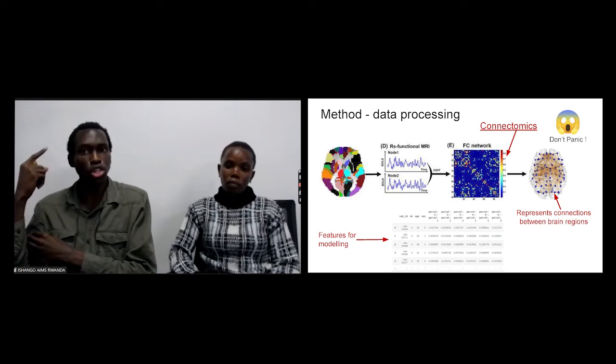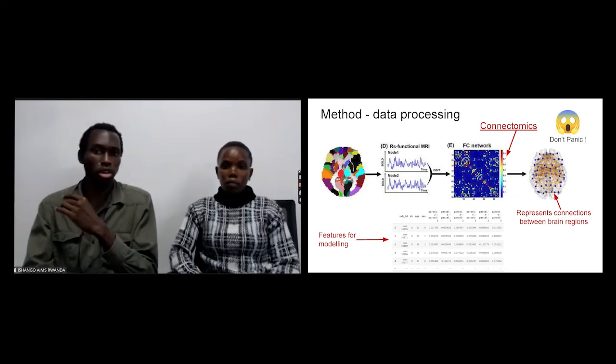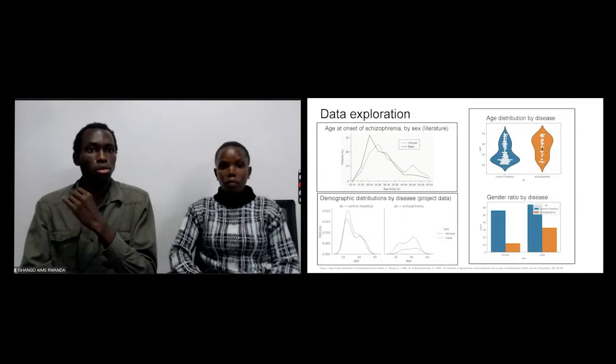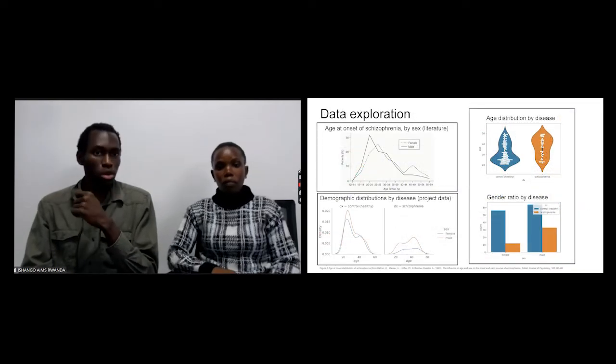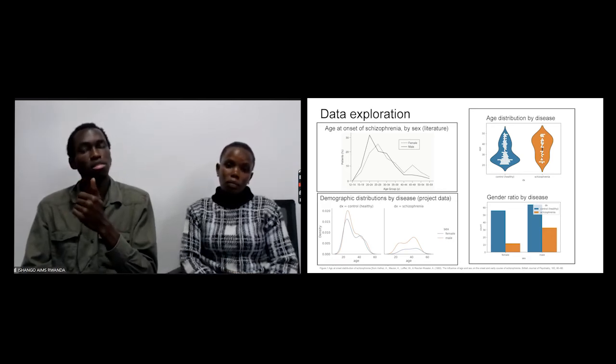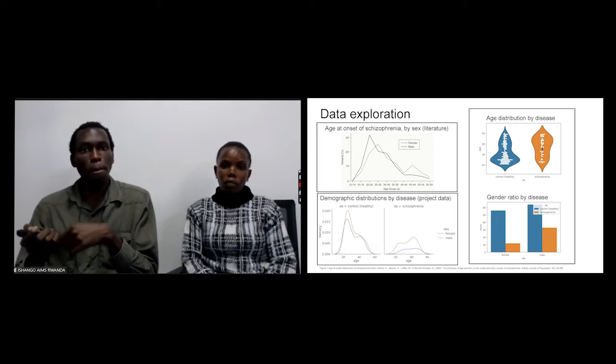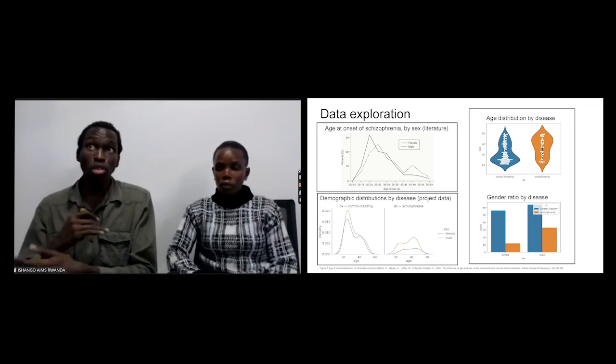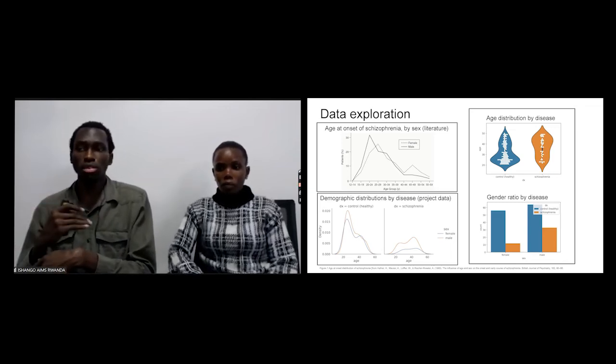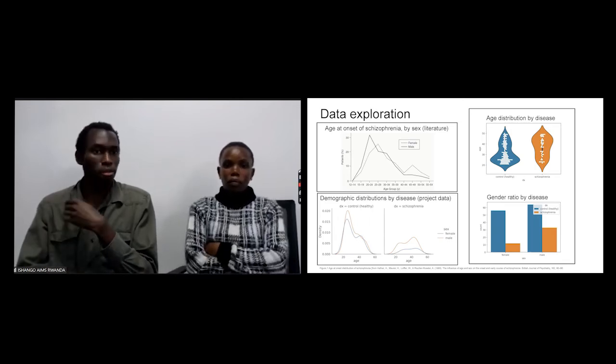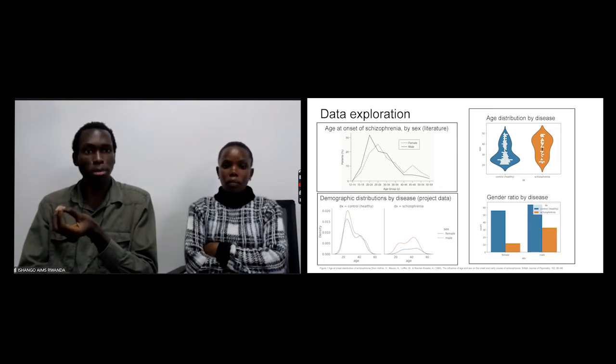Let's go for data exploration. From the literature we know that age is highly linked with schizophrenia, but sex not so much. What does it mean? When you are older you have higher probability to have schizophrenia. Then we have to be sure during our work that there is nothing wrong in our model, that we are predicting age instead of predicting schizophrenia. This is what we are calling confounding variables.